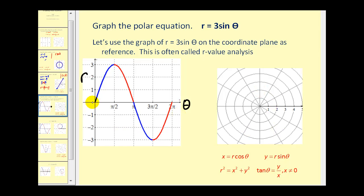And we'll try to use this information to graph it on the polar coordinate plane. So if we take a look at this first blue section, when theta increases from zero to pi over two, r increases from zero to three.